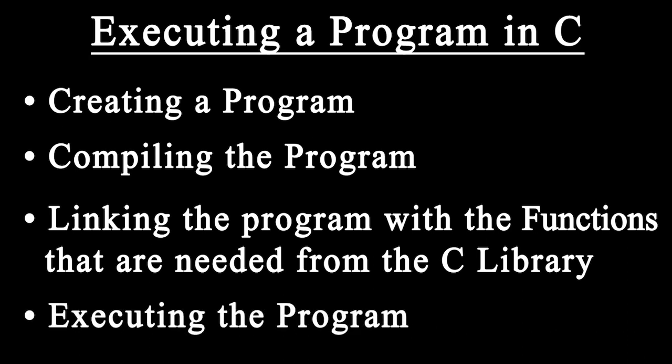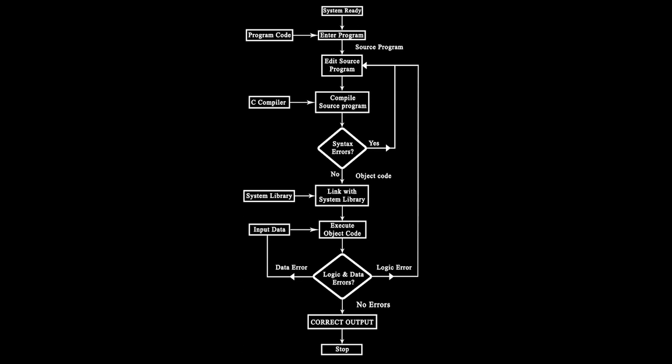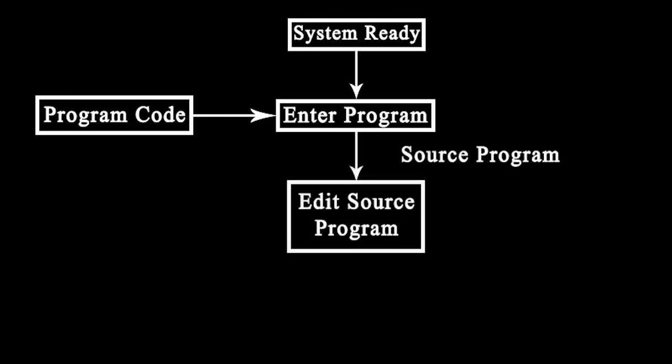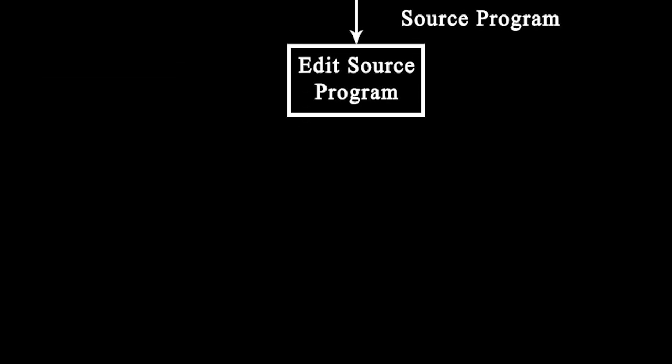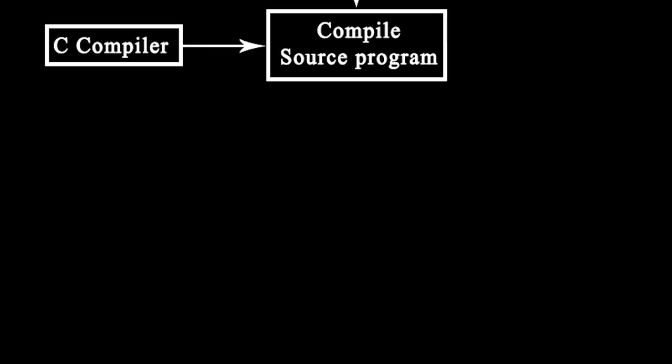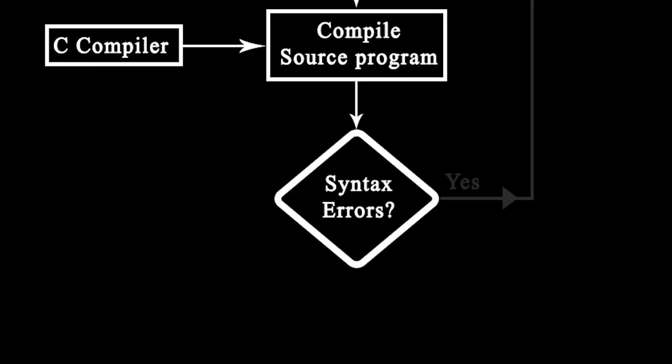I'll illustrate the process of creating, compiling, and executing a C program through a flowchart. First, the system gets ready, then I'll enter the program, and check from my end if there is any error. After that, I'll be compiling my program through the C compiler, and then the compiler will check for any syntax errors.